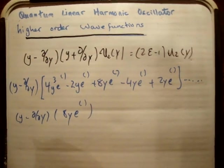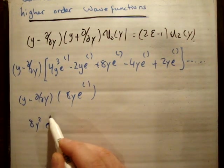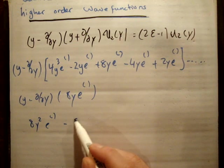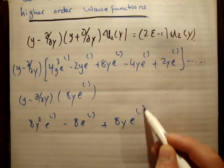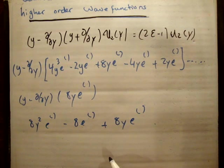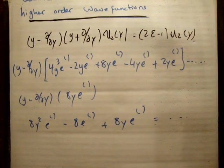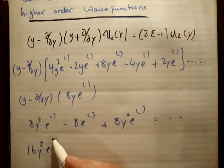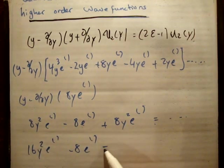And that turns out to be 8 times y squared times your exponential minus 8 times your exponential plus 8y squared times your exponential. Now I'm missing a term here. Sorry, that was a square. So we're going to get 16y squared e to the minus y squared over 2 minus 8 times e to the minus y squared over 2.